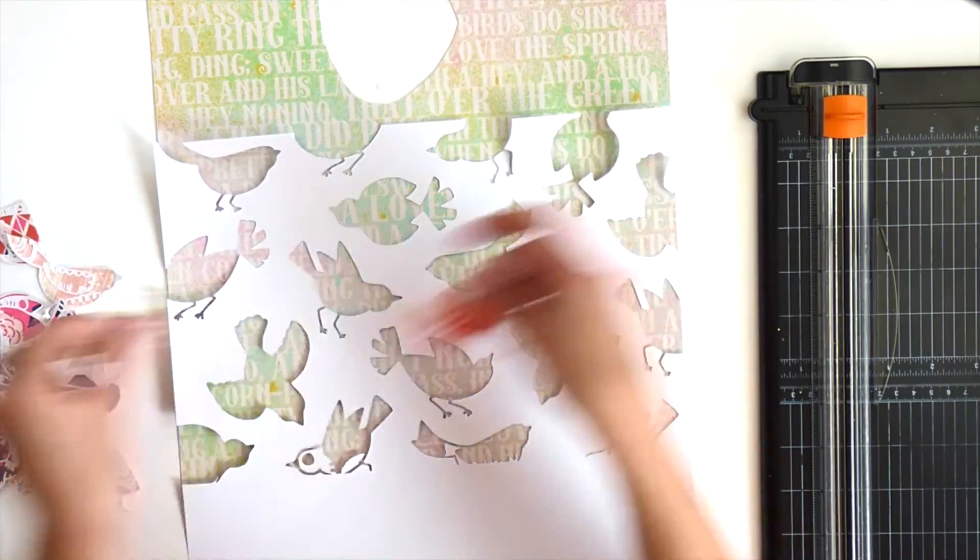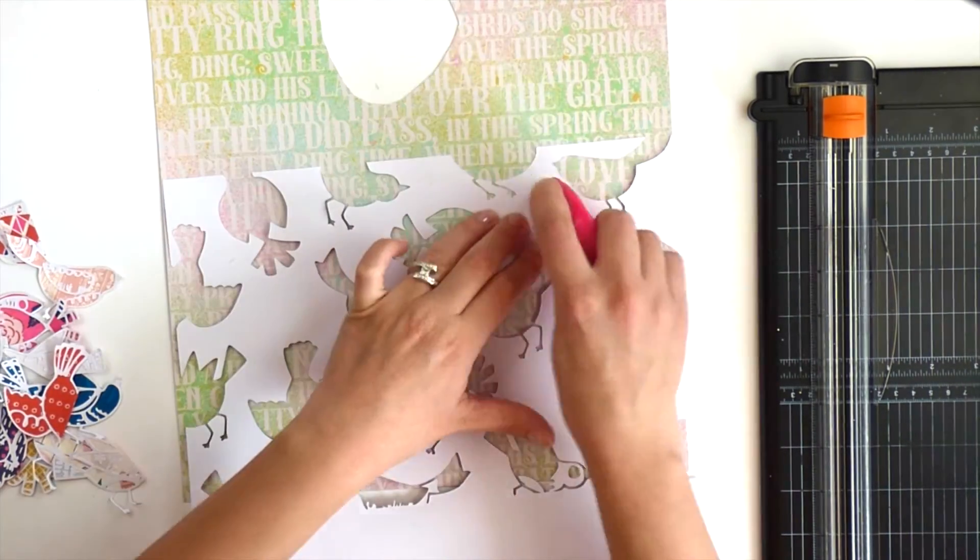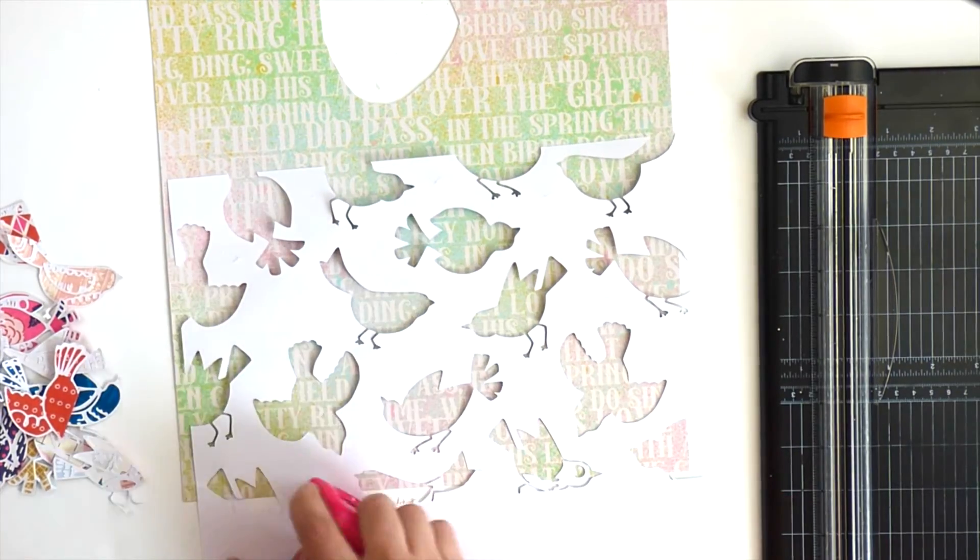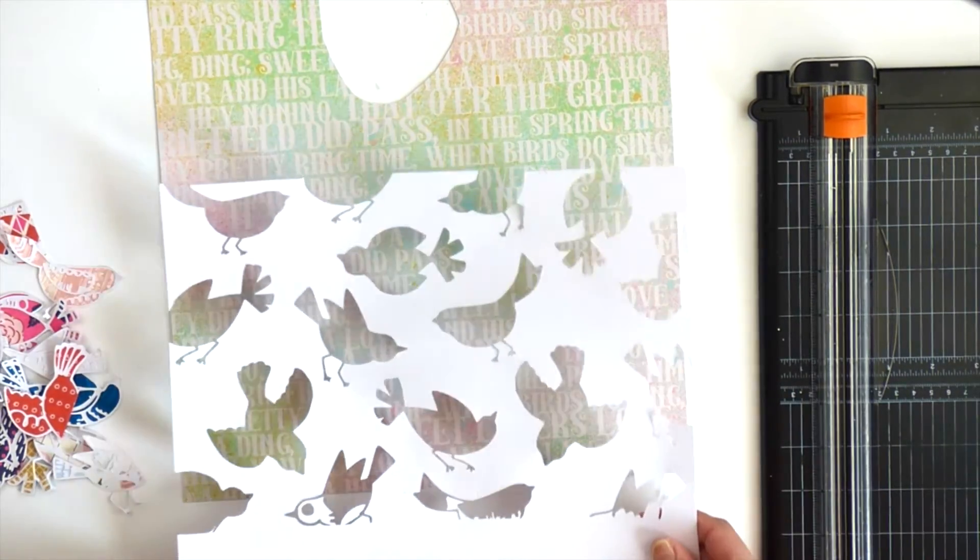So the next step is to apply a little bit of adhesive onto the back of the white cardstock here and there. Don't need to use a ton unless you want to. Flip it over.